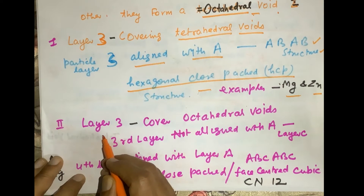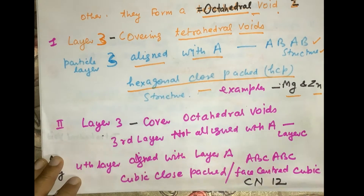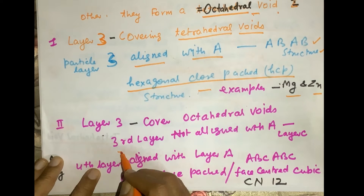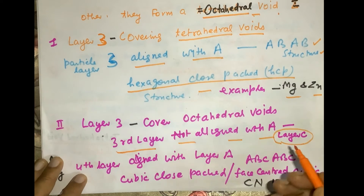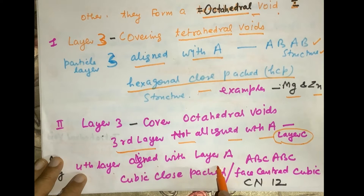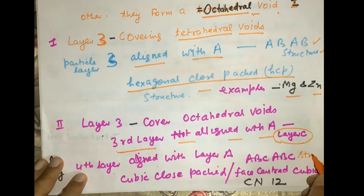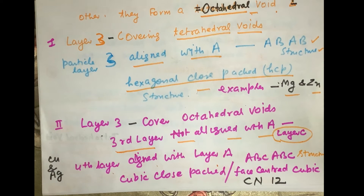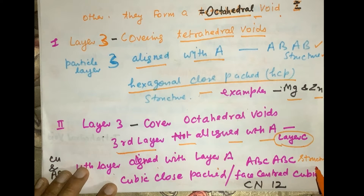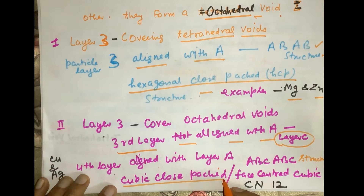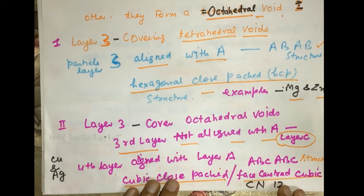The second option for placing layer 3 is to cover the octahedral voids created by layers A and B. If those are covered by layer 3, then the third layer is not aligned with A and may be called layer C. Then the fourth layer aligns with layer A, giving an ABCABC structure — the three layers are repeated in the crystalline solid.